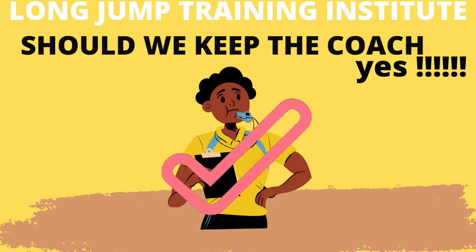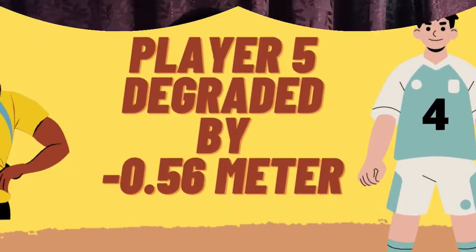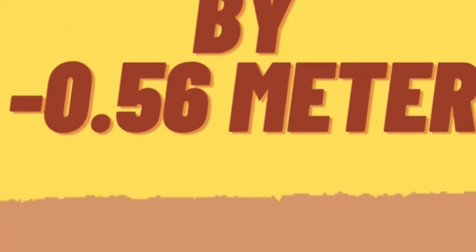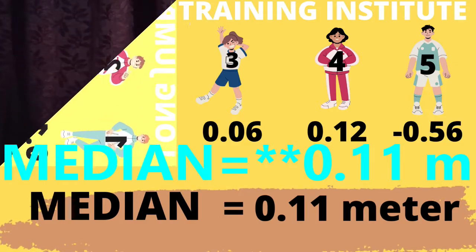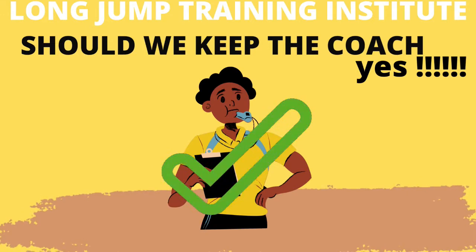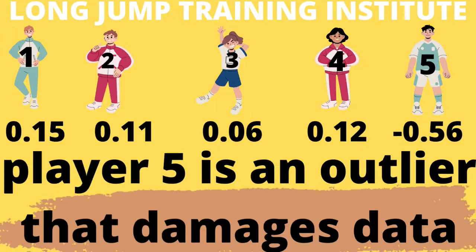After applying the median function, we get 0.12 meters. The median is the correct value and provides the right insight — the coach should definitely be kept. Notice how the minus 0.56 value was ruining our analysis when using the mean. The median function gives us 0.12 meters, which is the correct result.